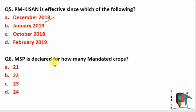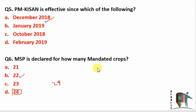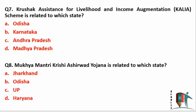MSP is declared for how many mandated crops? The Economic Survey gives the answer as 22, but it is more than 22 — if option 24 is given, that is more appropriate. In the list of MSP crops released by the government, there are 25 crops total: 24 mandated crops and one sugarcane under a Fair and Remunerative Price. Since 22 crops are mentioned in the Economic Survey, I am marking 22 as the right answer here, but the actual MSP list has 24 crops.